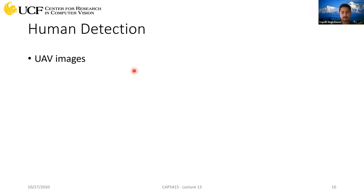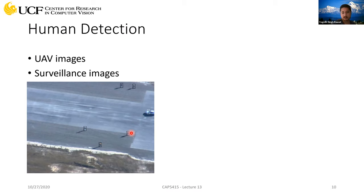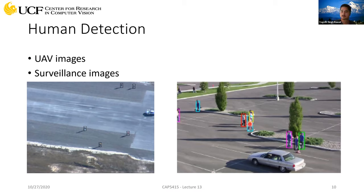This problem can have different variations. Images can be captured from ground view or aerial view — for example from a UAV or helicopter. In that case, the appearance of a human will be very different from ground views. You can also have surveillance images from CCTV cameras mounted on buildings with some elevation, where the appearance of the same object differs from ground view.